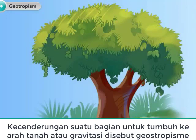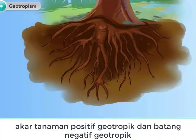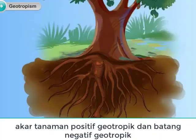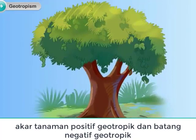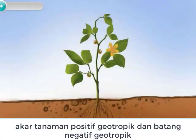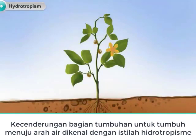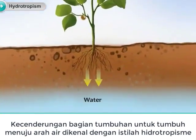The tendency of a part of a plant to grow towards the soil or gravity is called geotropism. The root of a plant is positively geotropic and the stem is negatively geotropic. The tendency of a plant part to grow towards the direction of water is known as hydrotropism.